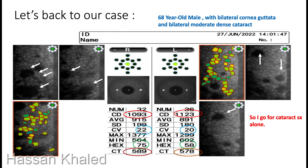Let's go back to our case: a 68-year-old male with bilateral corneal gutata and bilateral moderate dense cataract. You can see the cell density for both the right eye and left eye is more than 1,000 cells per millimeter square, the CV coefficient index is less than 40 — which is normal — the hexagonality is more than 50%, and the central pachymetry is less than 600 microns. So I go for cataract surgery alone.